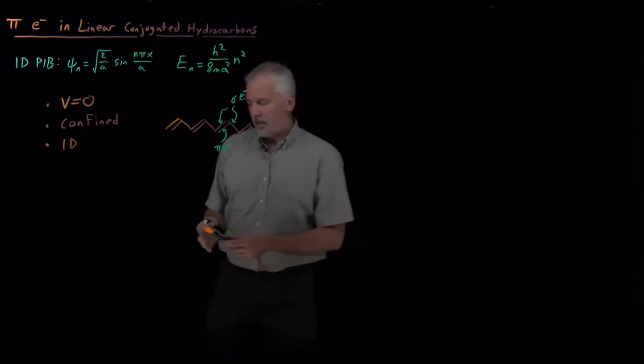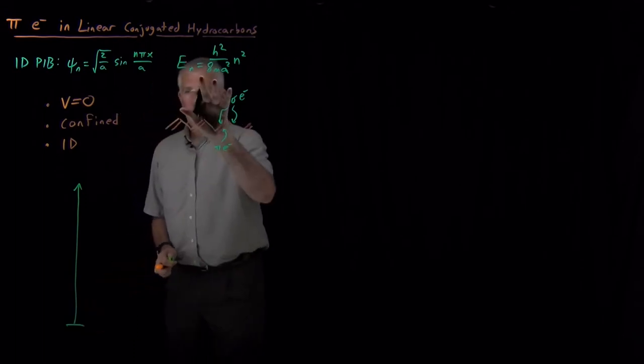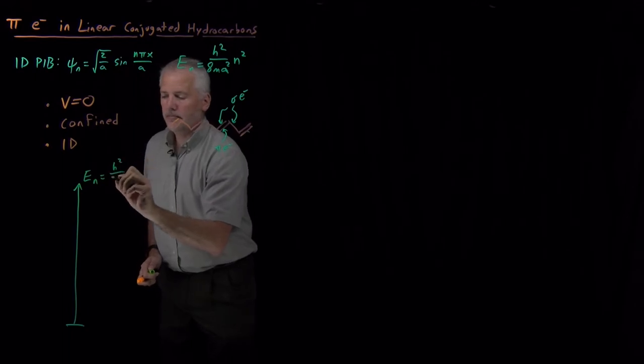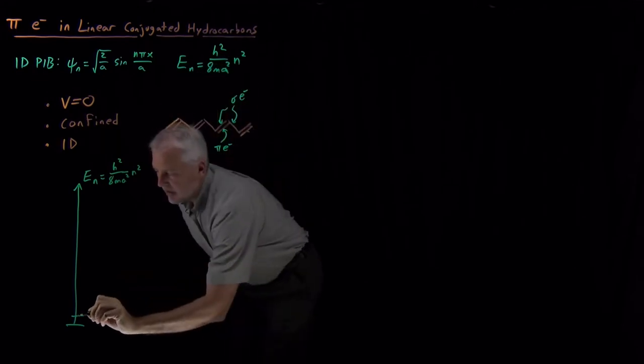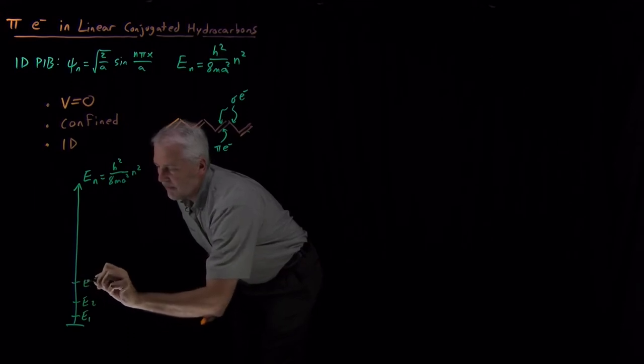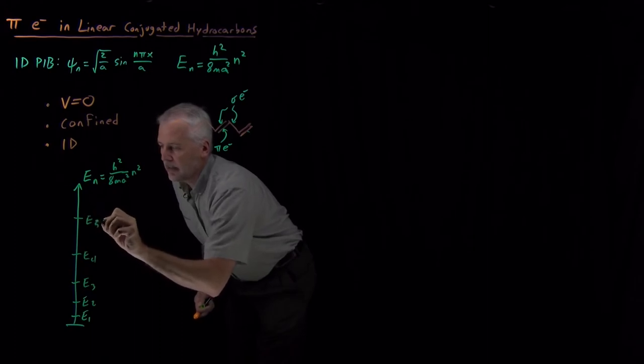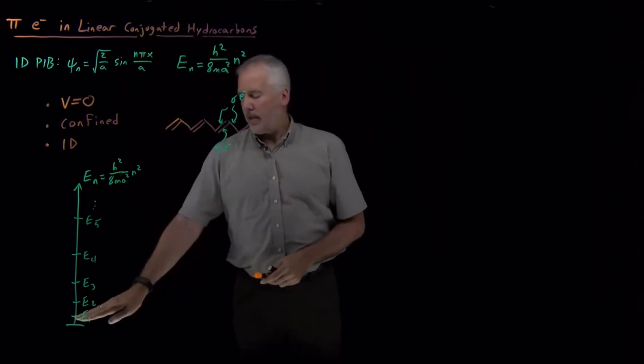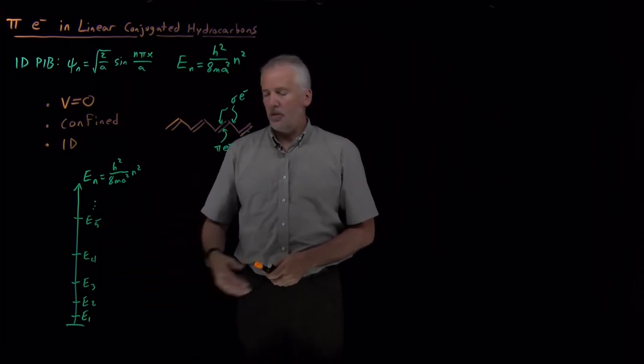So what that means is, based on this prediction of the energies, the energies of the pi electrons should have this form. The eight pi electrons in this molecule, there's going to be a pretty low E sub 1, E sub 2. The energies are going up as E squared, so they're getting a little bit further apart as if they climb the ladder here. But there's this whole hierarchy of energy levels that these pi electrons can occupy. So the electrons live on this particular ladder of energy levels.